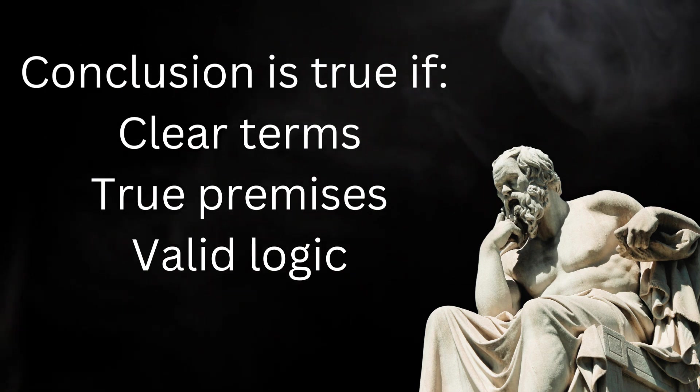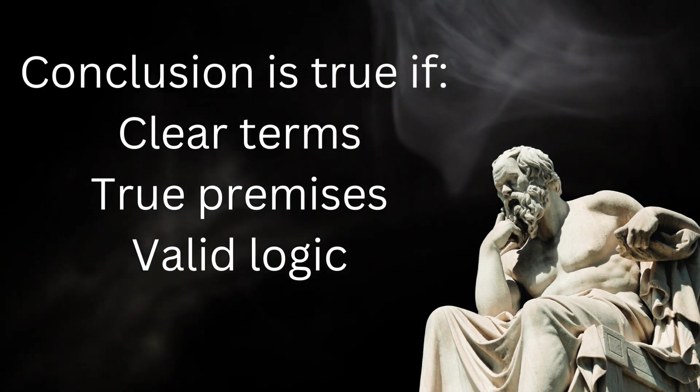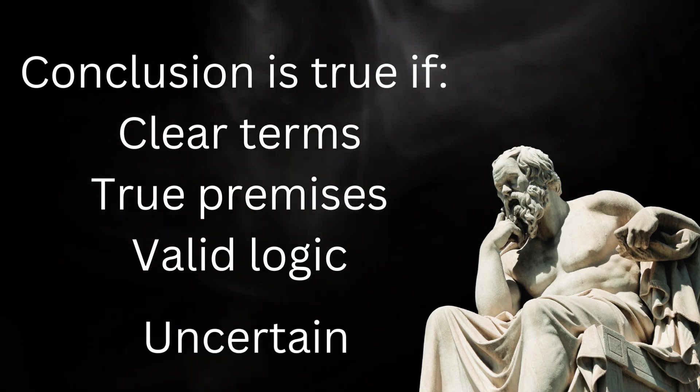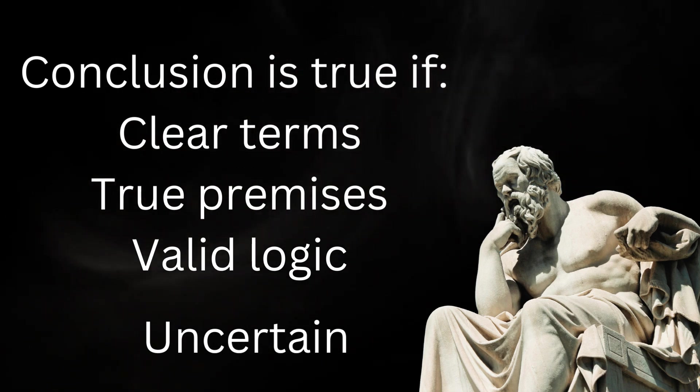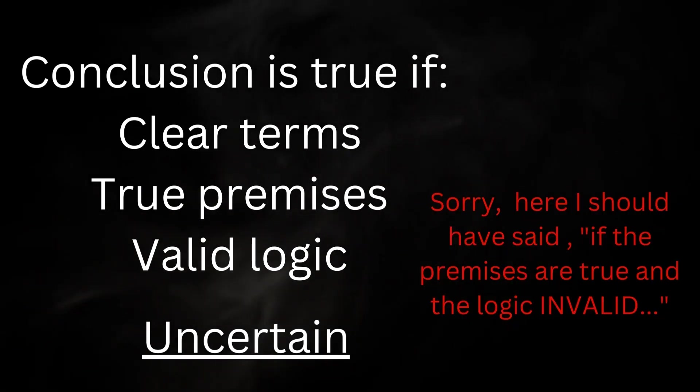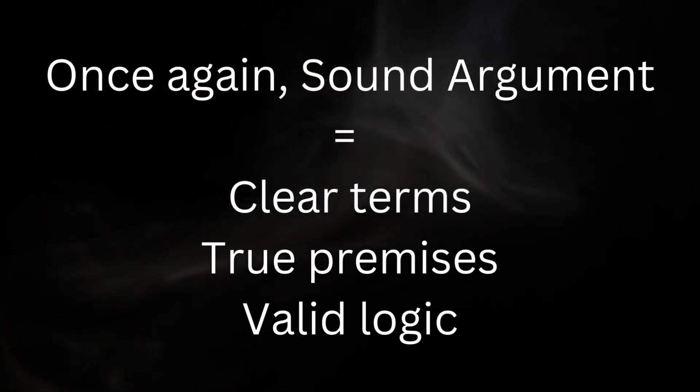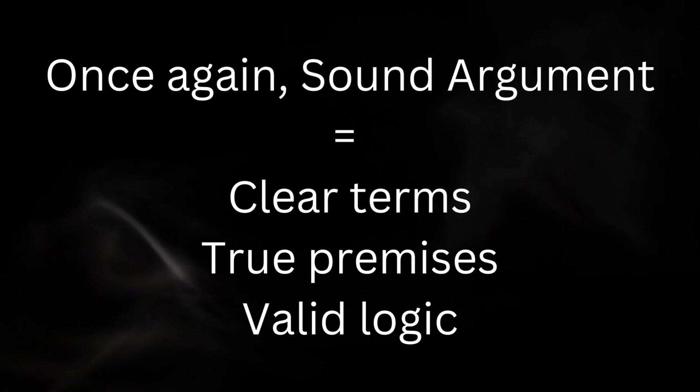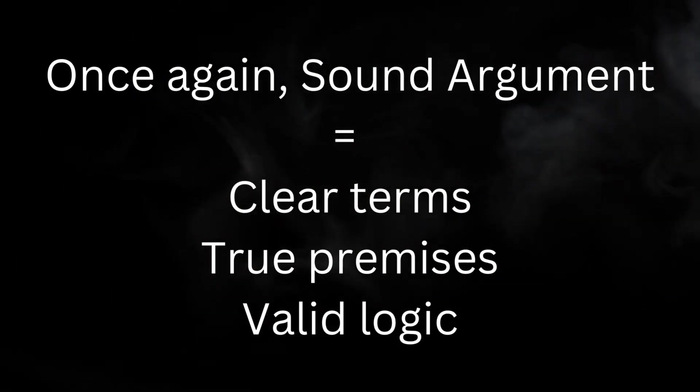If the terms are unclear, the premises true, and the logic valid, then the conclusion is uncertain. If the terms are clear, the premises false, and the logic valid, then the conclusion is uncertain. If the terms are clear, the premises are false, and the logic valid, then the conclusion is once again uncertain. So to build an airtight argument, you must include clear terms, true premises, and valid logic.